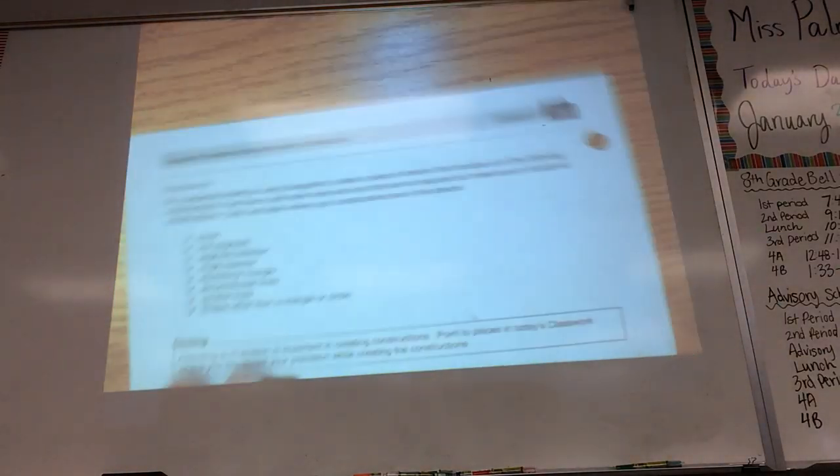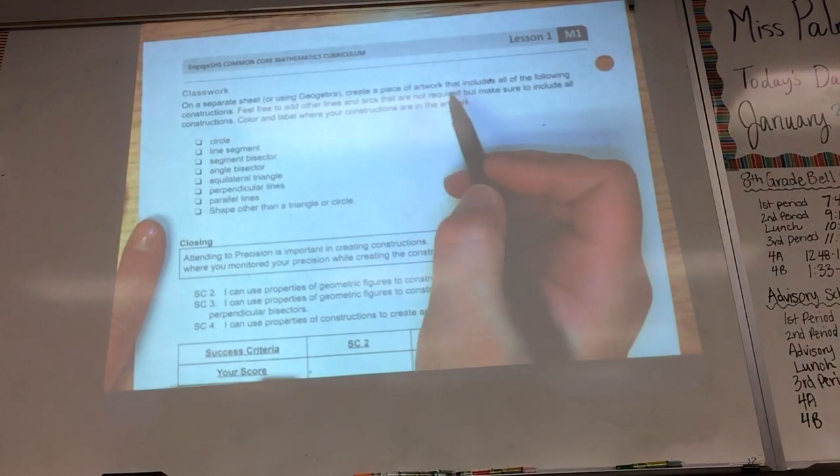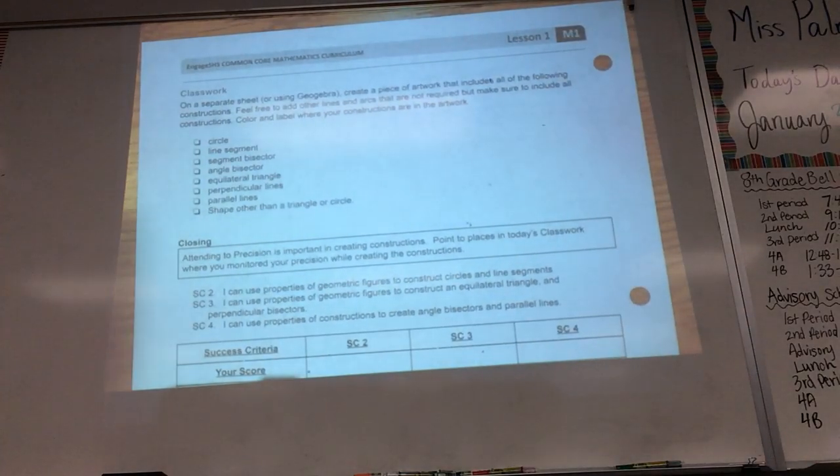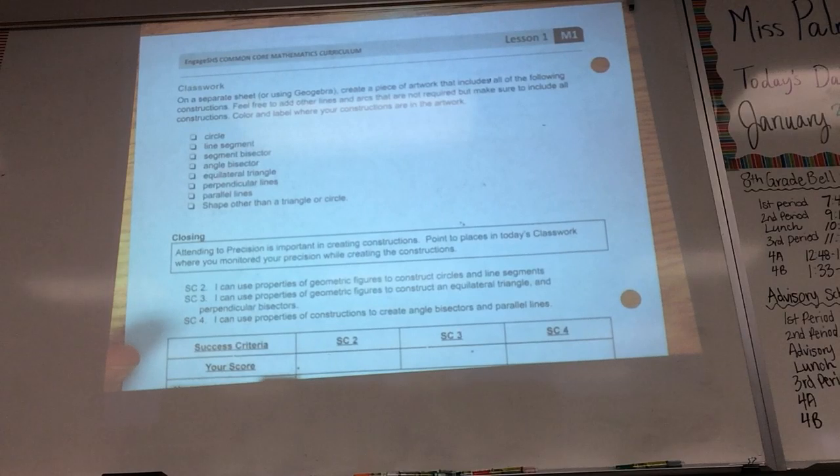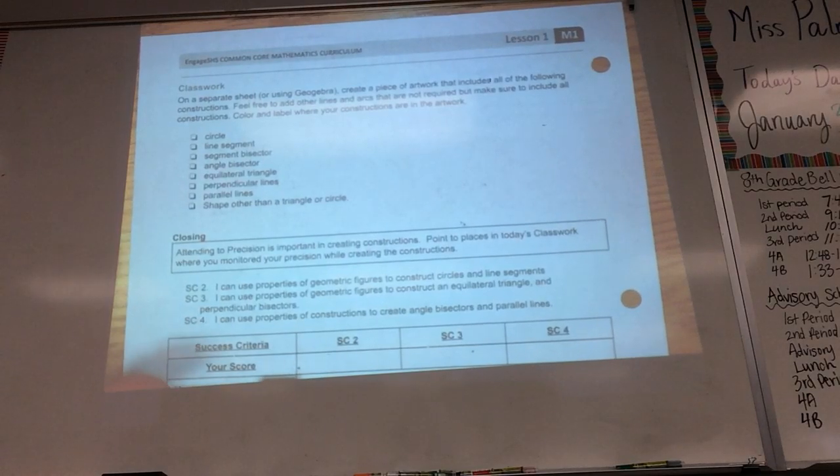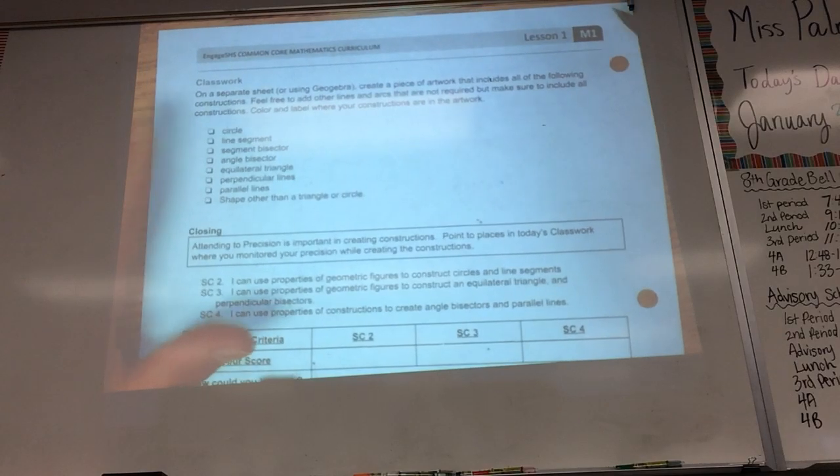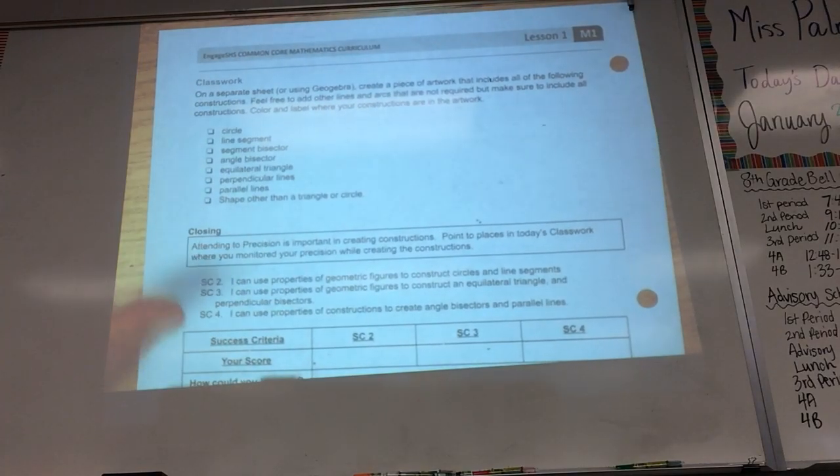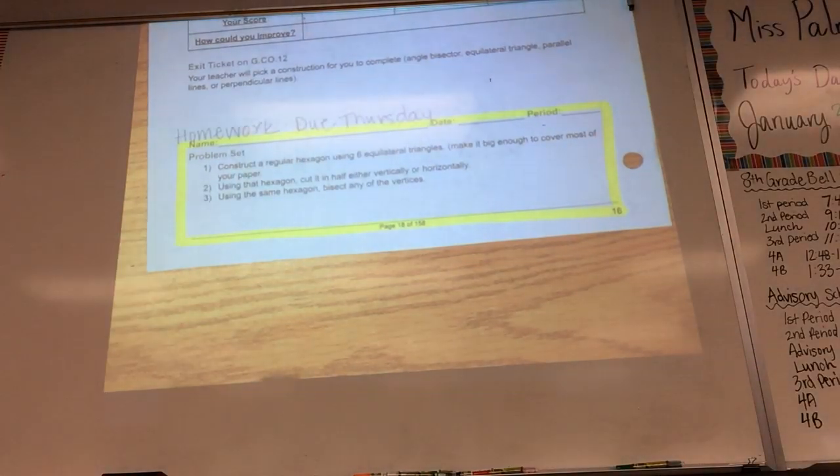Well, whatever. So the rest of this lesson is, using a separate piece of paper, create a piece of artwork that includes all of the following constructions. Feel free to add other lines and arcs that are not required, but make sure that you include all of these constructions. Color and label where your constructions are in the artwork. This plus this will be your homework today, and you have 15 minutes.